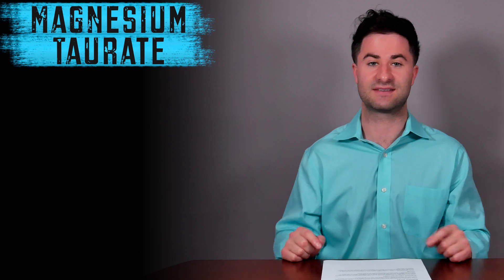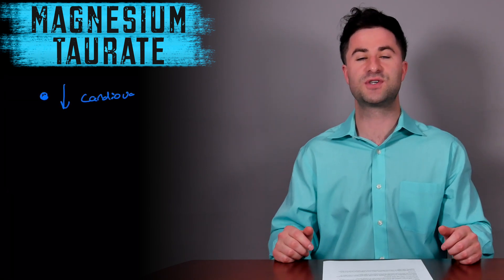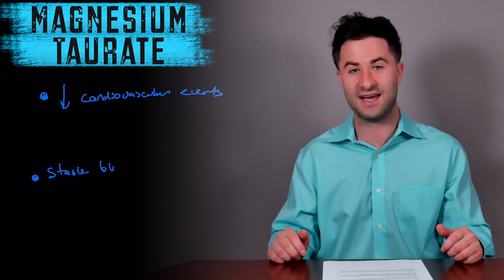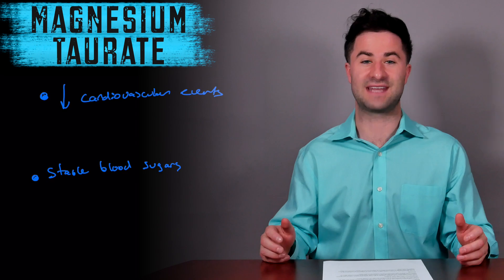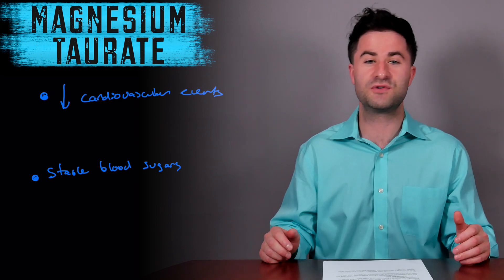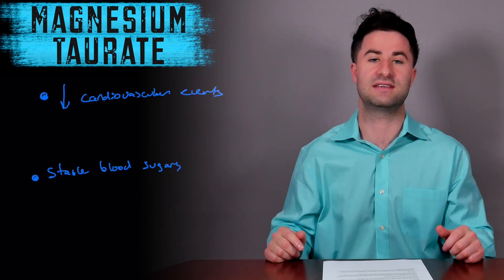The next one we have is magnesium taurate. This is magnesium bound to the amino acid taurine. It has been shown to reduce overall cardiovascular events such as heart attacks and to provide more stable blood sugars. If you have any type of cardiovascular disease or you struggle with maintaining consistent blood sugars, this type of magnesium would probably be best for you.